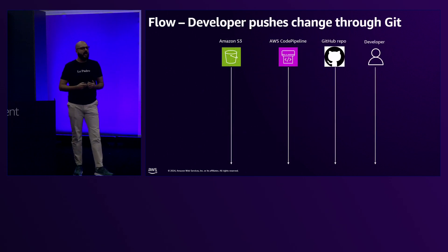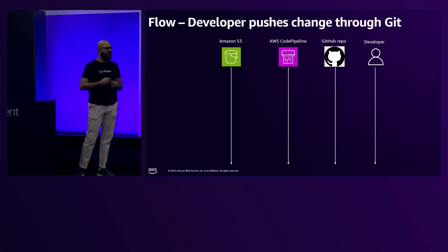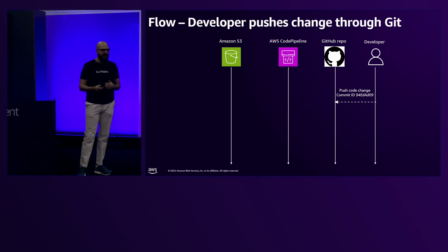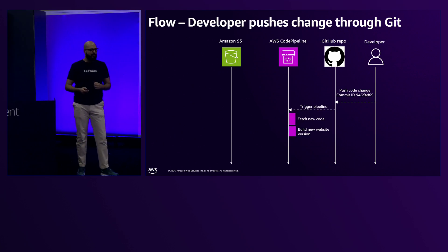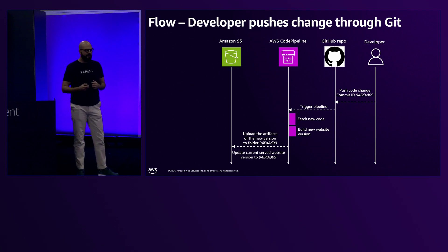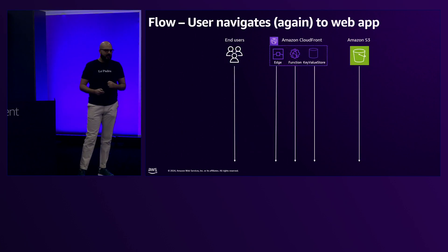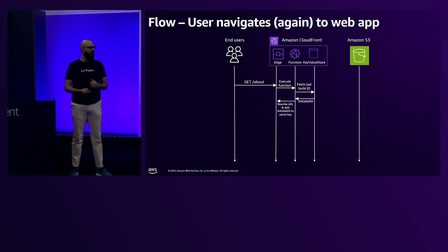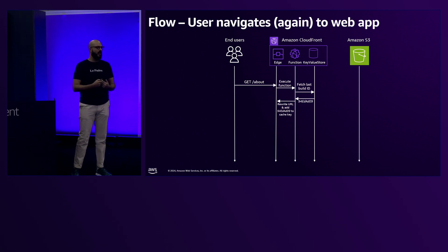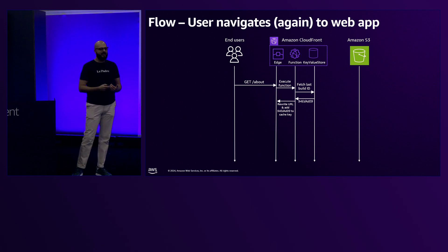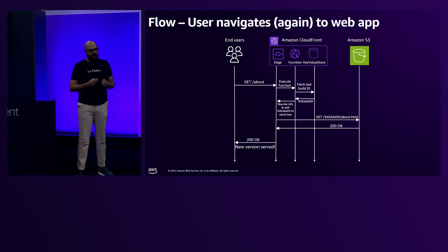When a developer pushes a commit, it triggers the pipeline. The pipeline fetches the new code from GitHub, builds the new artifact, and uploads it to a new folder in S3. Step Functions then kick off a workflow to update the current version ID in the CloudFront Key Value Store. Next time a user visits the website, the edge location executes the function, gets the latest build ID, points to the new build's folder, and users immediately start seeing the new version.